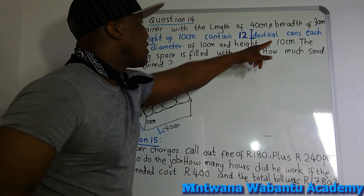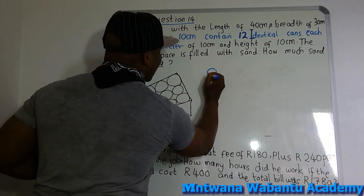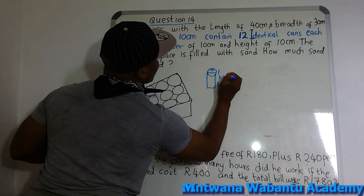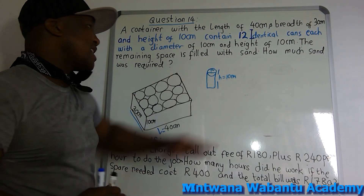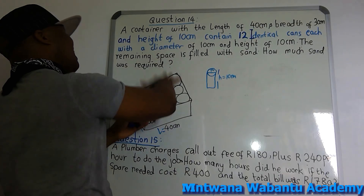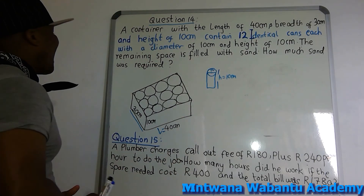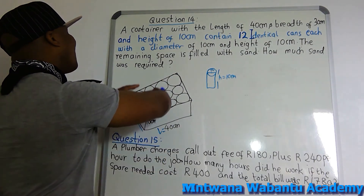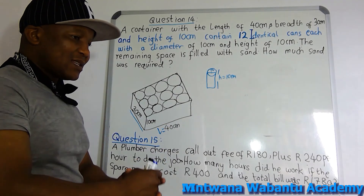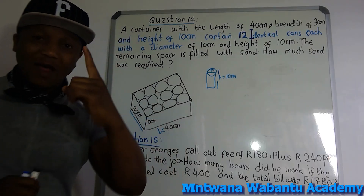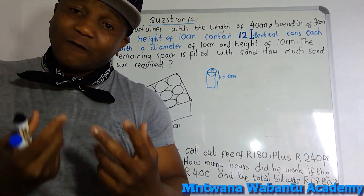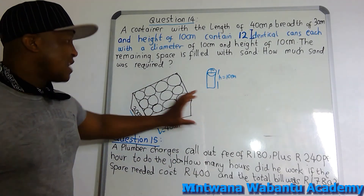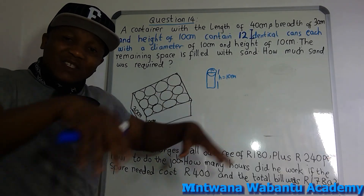Each cylinder has a diameter of 10 cm and a height of 10 cm. The remaining space is filled with sand — because when you place the cans in the box, there are spaces in between. The question asks: how much sand was required? So we need to find the volume of the sand. First, find the total volume of the box, then find the volume of all 12 cans, and subtract.